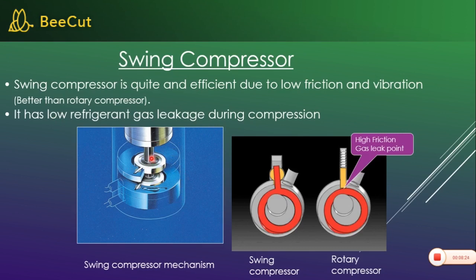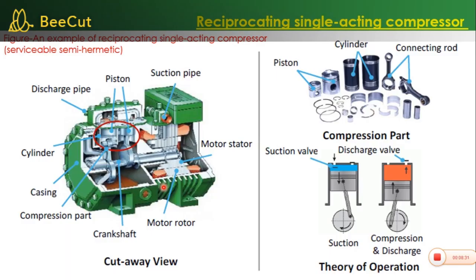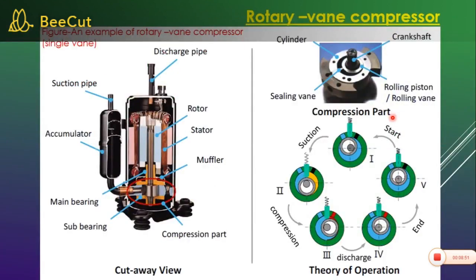This is a dual swing type compressor. These are some pictures. What we can see here is the cut section view. The compressor is a single acting type. You can see the discharge, the shaft, the motor — it is the semi-hermetic type. This next part is the rotary vane type. Parts visible include: suction, discharge, accumulator, bearing, sub-bearing, compression part, muffler, and stator.